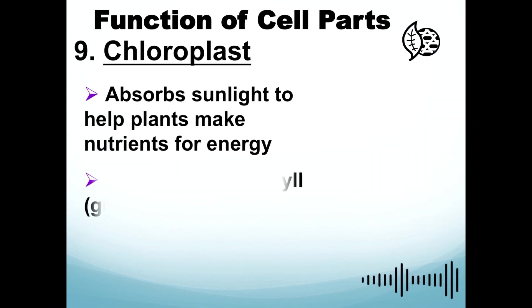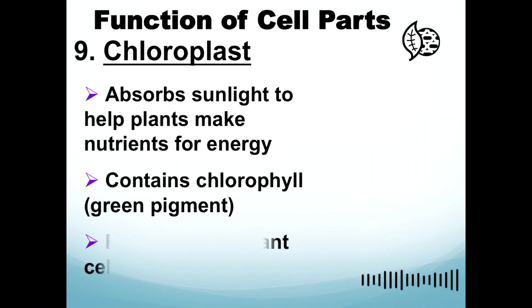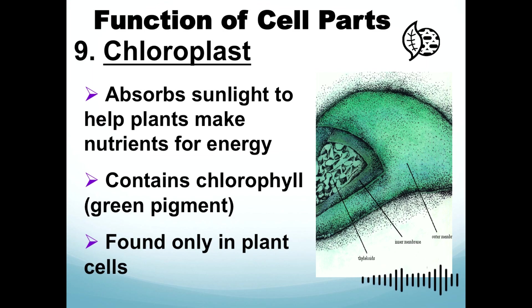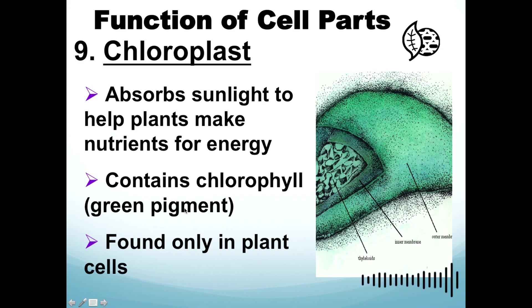Chloroplasts are usually only present in plant cells because they contain chlorophyll, which produces the green pigment of the plant. The main function of chloroplasts is to absorb light to help plants make nutrients for energy.